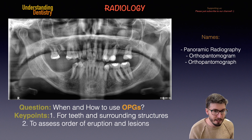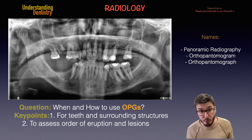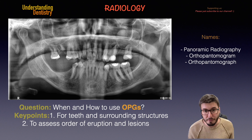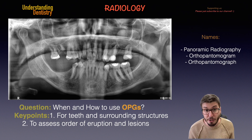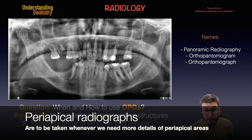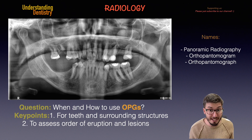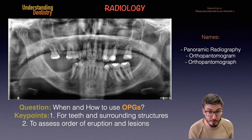The second key point is that we can use OPGs to assess the order of eruption and lesions as well, because we have a very nice view of the mandibular and maxillary alveolar ridges. For example, osteolytic lesions and cysts — we can have a general view of these. If we need more details, we can always take a periapical radiograph, or to plan a surgery or when we need three-dimensional information, we can take a CBCT, which is even more common in dentistry.